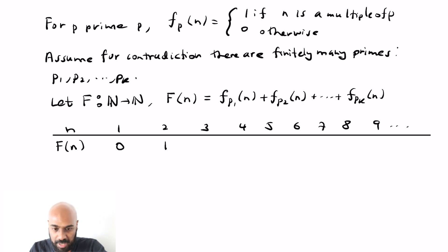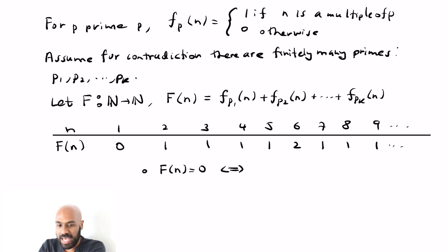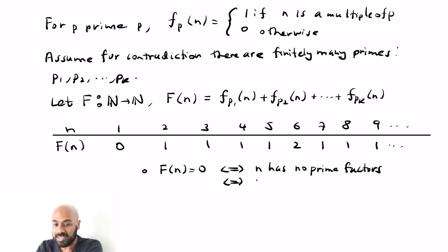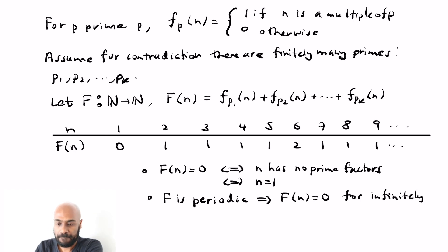If we write down capital F: F(1) = 0 since 1 has no prime factors; then we get 1, 1, 1 for the primes; 4 has only one prime factor; 6 has 2, and so on. Now there's a problem: on one hand, F(n) is only 0 when n = 1, because 1 is the only positive integer without prime factors. On the other hand, capital F has to be periodic because it's a sum of a finite number of periodic functions. If it's periodic and F(1) = 0, then F(n) must be 0 for infinitely many positive integers n — and that's a contradiction.